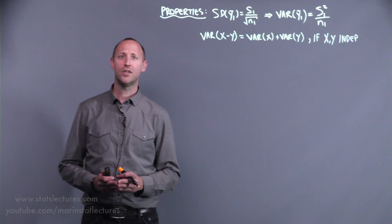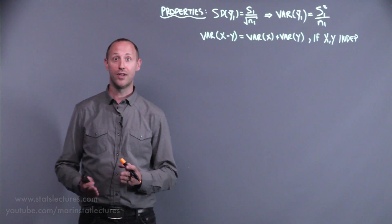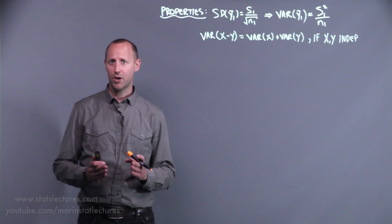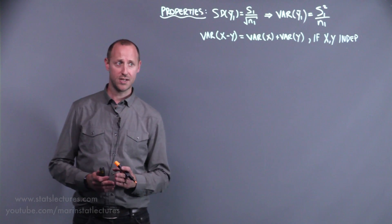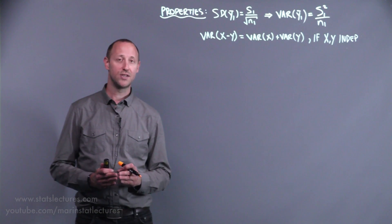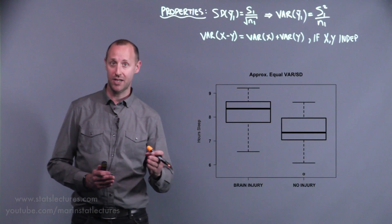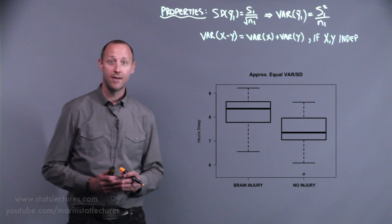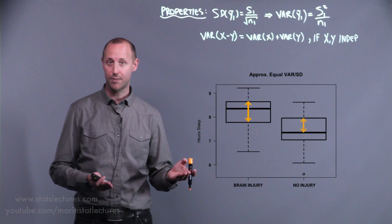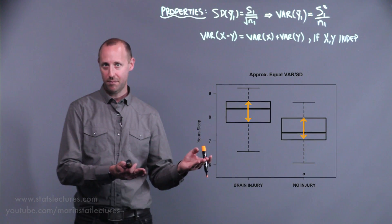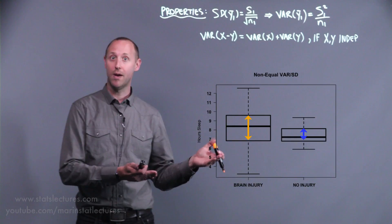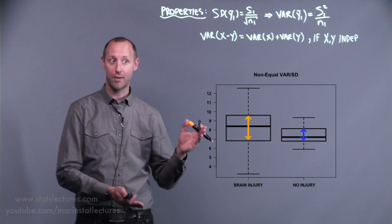We're also going to derive the standard error for the difference in means. The main question we want to ask ourselves is: do we believe at the population level the variability around the mean in these two groups is roughly the same, or do we think one group might be much more variable than the other?